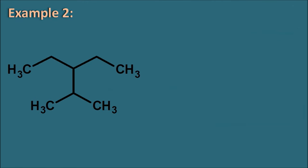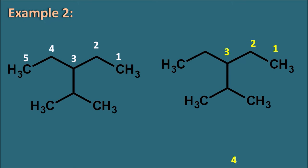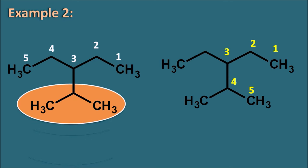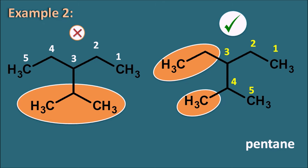Another example with no functional groups: two 5-carbon chain possibilities. By Criteria 3 — maximum side chains — one numbering gives 1 side chain, the other gives 2 side chains. The chain with 2 side chains is selected as the parent chain. Reverse numbering gives locants at positions 2 and 3 rather than 3 and 4. So the name is 3-ethyl-2-methylpentane.